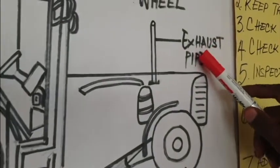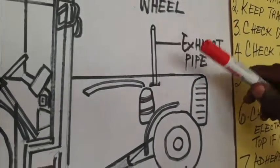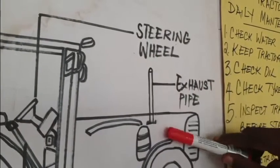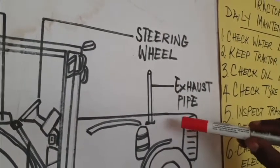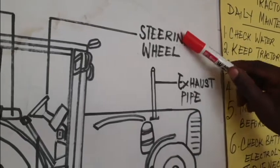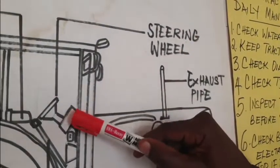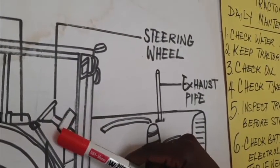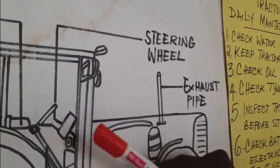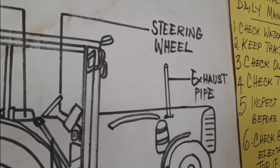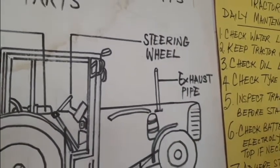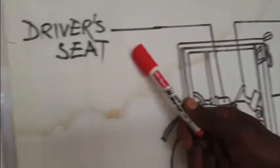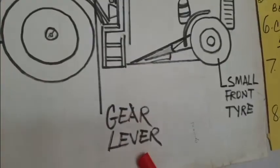The exhaust pipe expels the carbon monoxide that is generated during combustion in the engine of the tractor. The steering wheel is the device used by the driver to direct the movement and direction of the tractor. So you have the small front tire, exhaust pipe, steering wheel, driver's seat, big chunky tire, and gear lever.